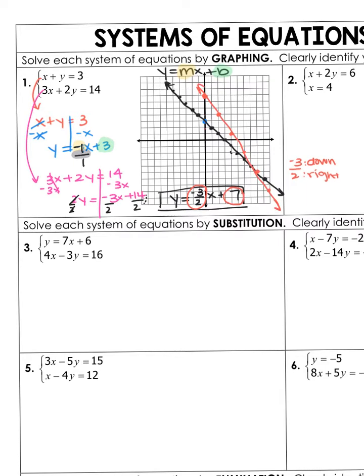You should have seen that they crossed right here. Now we just have to find out where that coordinate is. Going right 1, 2, 3, 4, 5, 6, 7, 8 and down 1, 2, 3, 4, 5. I had to go right 8 and down 5. So my solution is 8, negative 5. That's your answer to the first one.